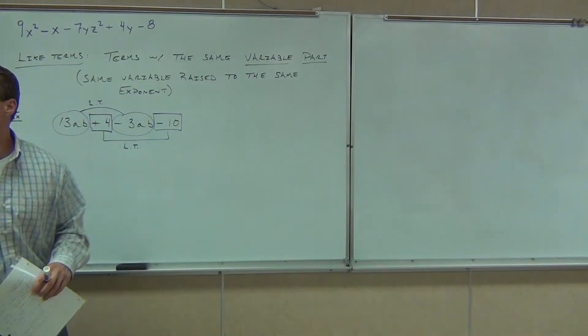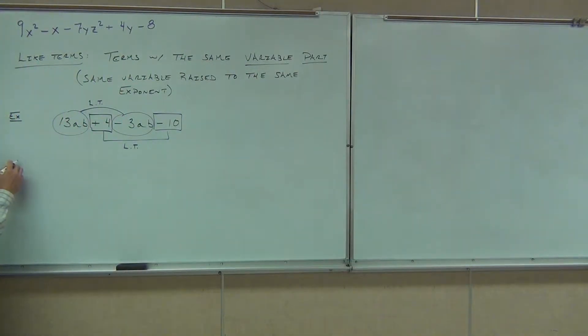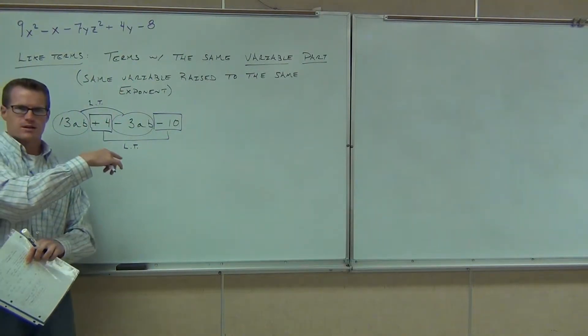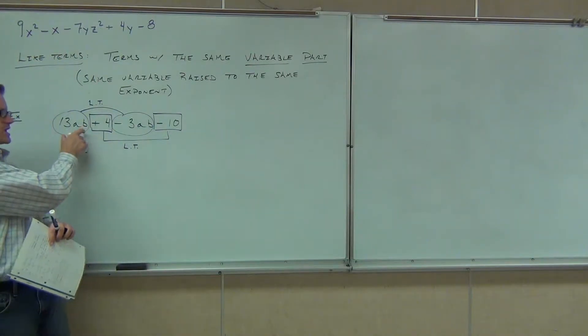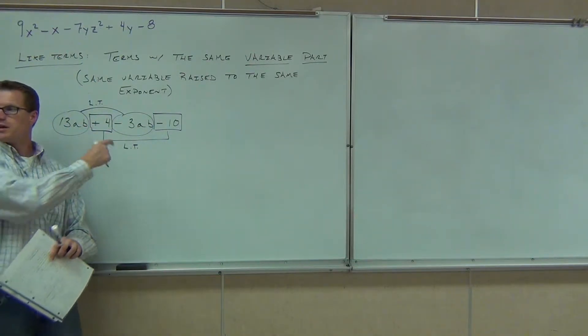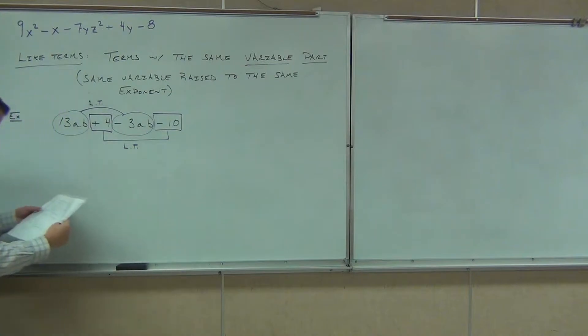Let's do one more to really get the hang of this. I'll have you do one on your own. Then we'll talk about how to combine these things. First, are you okay that these are, in fact, like terms? Yes. What we're looking for is the AB and AB. Those match up. Number, number. Those match up.